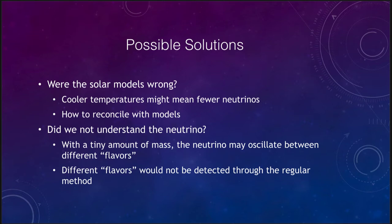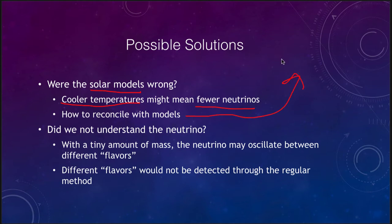One possibility: could the solar models be wrong? Cooler temperatures in the Sun's core would mean lower reaction rates and fewer neutrinos produced. The problem is how to reconcile this with all the other observations, which seemed to fit the existing models. If we used cooler temperatures, that would throw off all our other models — while we might fit the neutrino observation, we would not fit the other observations.